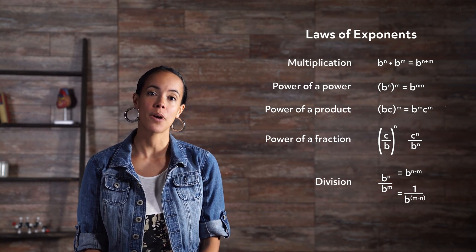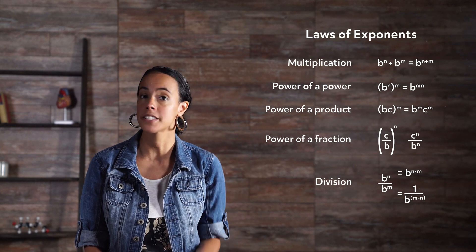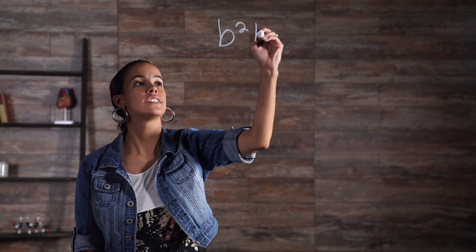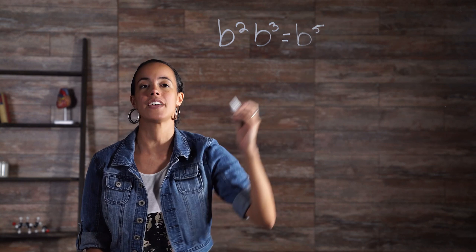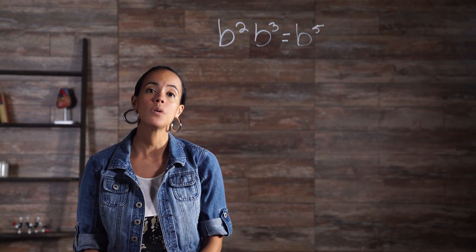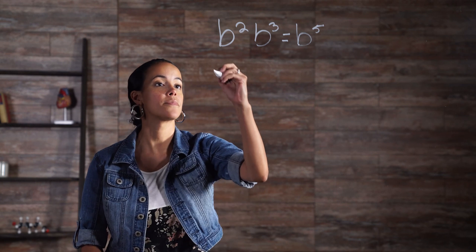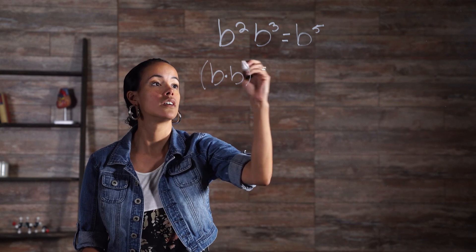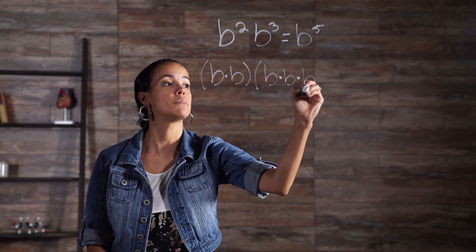The product of powers property applies to powers with the same base. When asked to multiply powers with the same base, simply add the exponents. For example, b squared times b cubed equals b to the fifth. This rule makes intuitive sense if you expand each power like this: b times b times b times b times b.